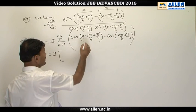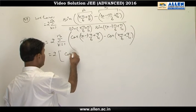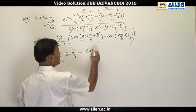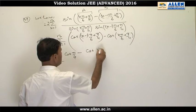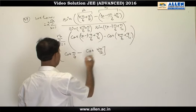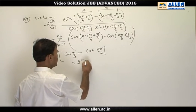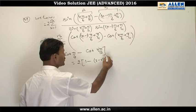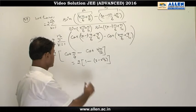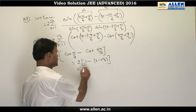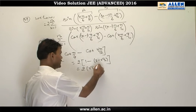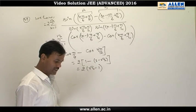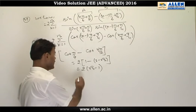When k varies from 1 to 13 the series telescopes. For k = 1 we get cot(π/4) minus cot(5π/12), which equals 1 minus cot(75°) = 1 minus (2 − √3). The final result is 2(√3 − 1). The correct answer for this question is option C.